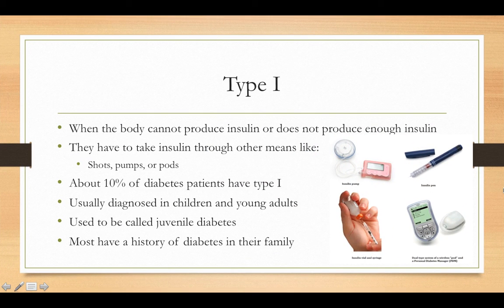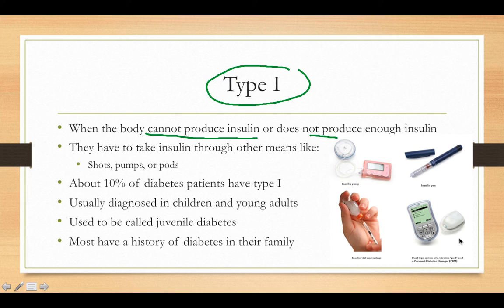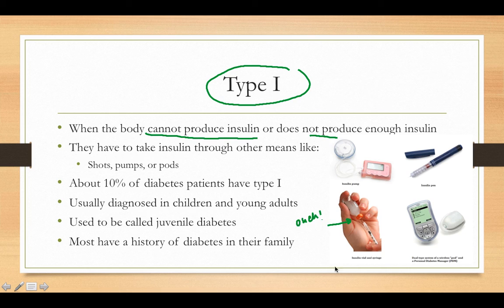Type 1 diabetes is when your body cannot produce insulin, or produces very little. It's something people are typically born with and have early in life — not something you typically develop later on. If you don't make insulin, you need a pump, shots, or pods, as shown on the right-hand side. About 10% of diabetes patients have type 1. It used to be called juvenile diabetes, but is no longer. Most people with type 1 have some family history of diabetes.